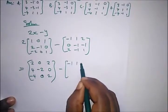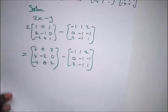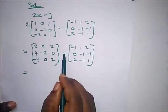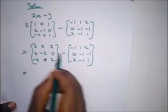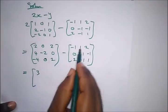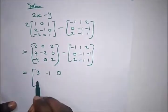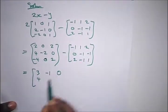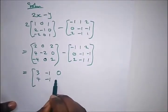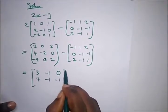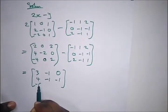And we're subtracting: minus one, one, two, zero, minus one, minus one, two, minus one, one from it. Performing the subtraction: two minus minus one gives three, zero minus one gives minus one, two minus two gives zero, four minus zero gives four, minus two minus minus one gives minus one, zero minus minus one — and minus four minus two gives minus four.